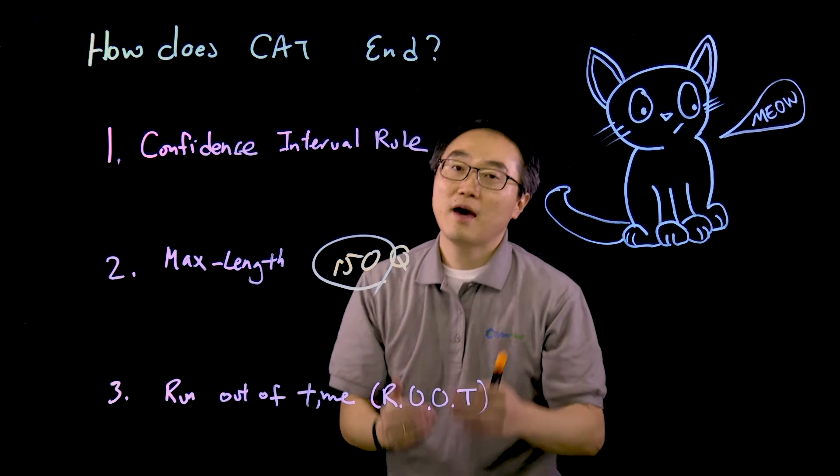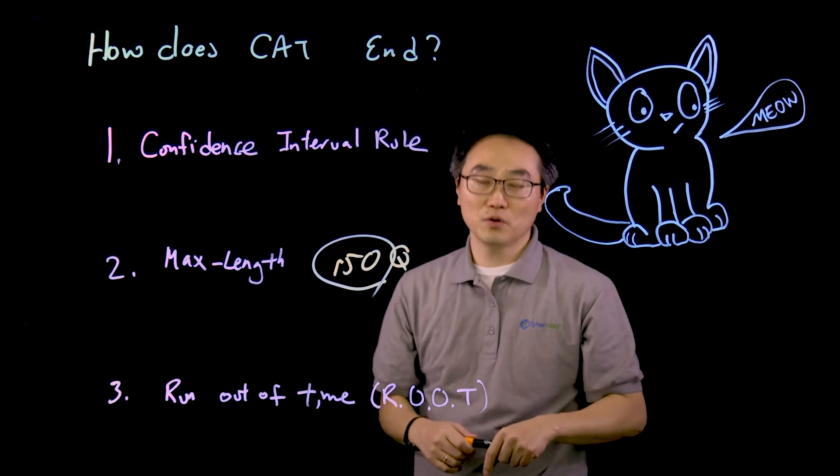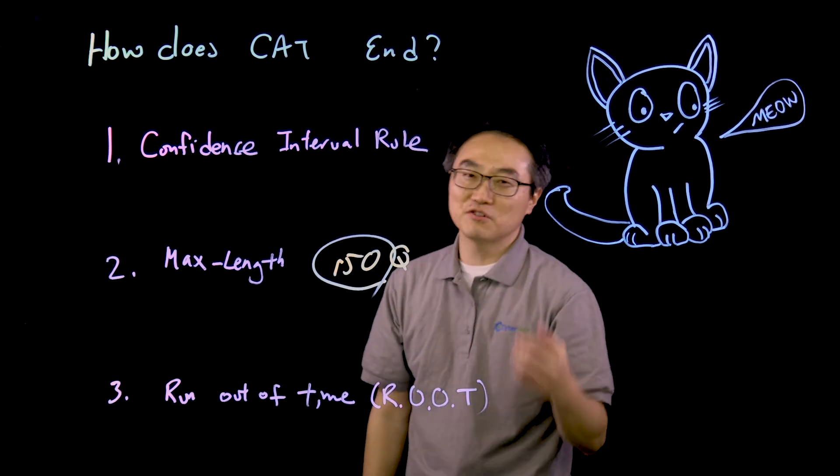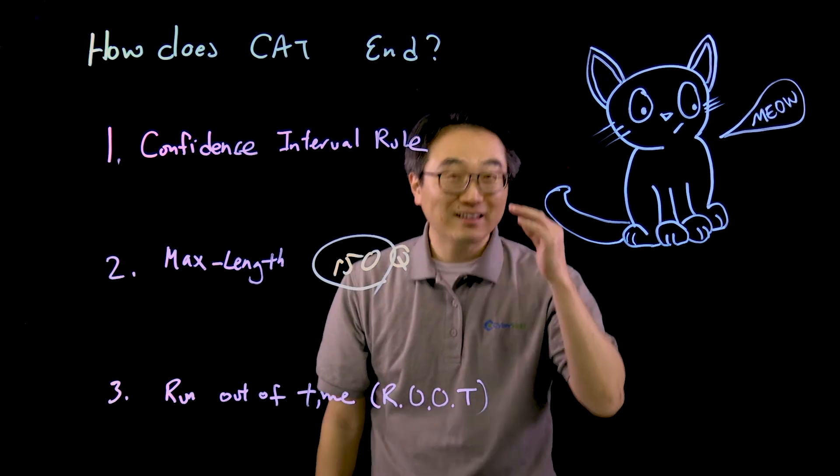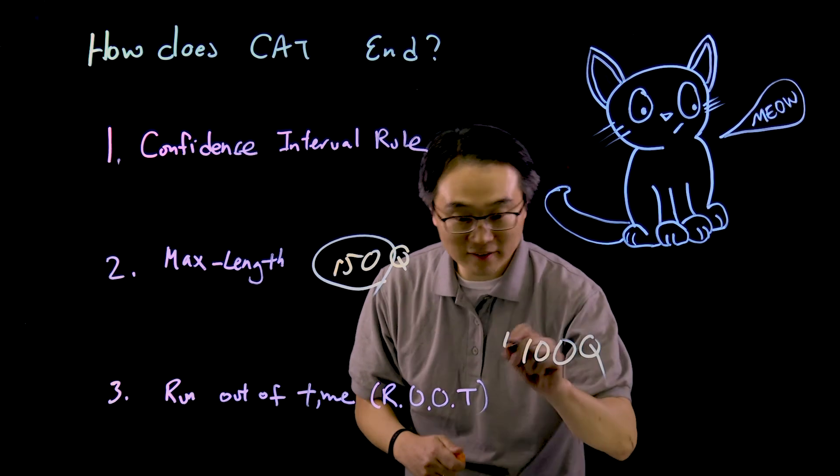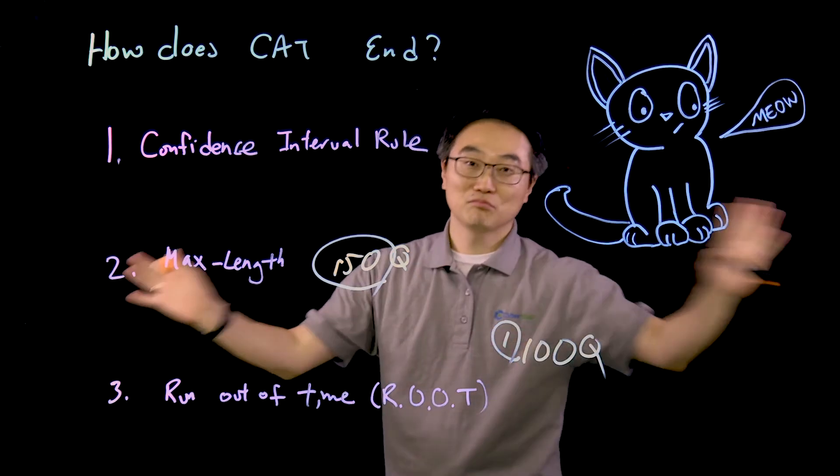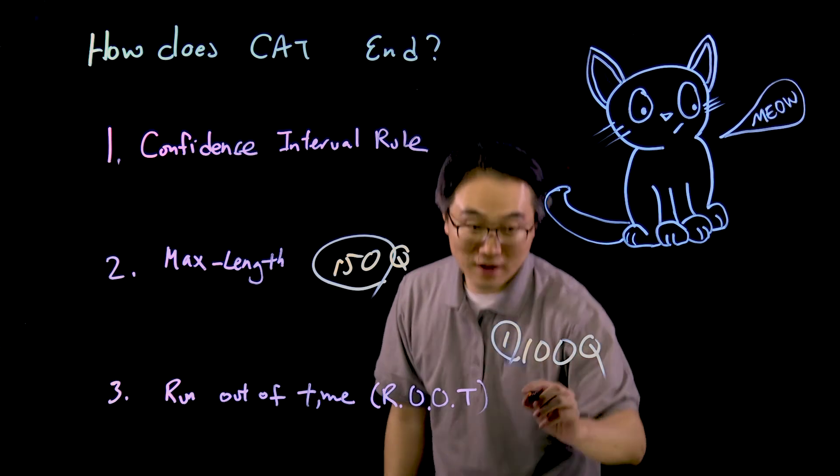At that point, what the ROOT Rule is going to do gets a little complicated because it's got a lot of conditions. One is: in order to pass, you at least have to go through 100 questions. That's the given rule. If you didn't finish 100 questions by the time you run out of time, you fail—nothing to discuss. Now let's say you passed this, you actually answered all your questions.